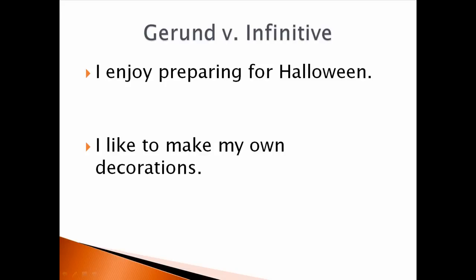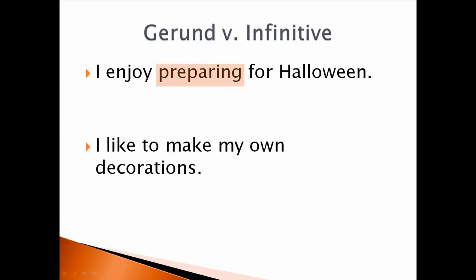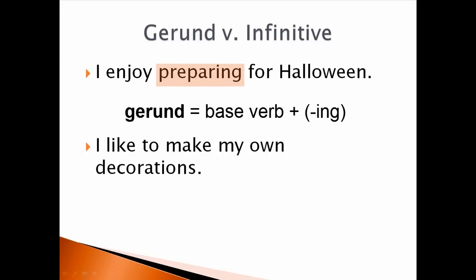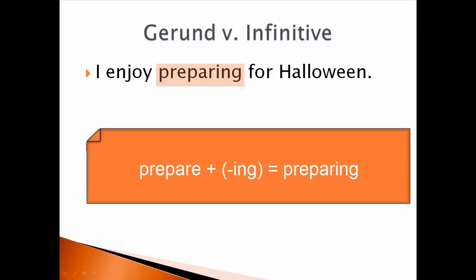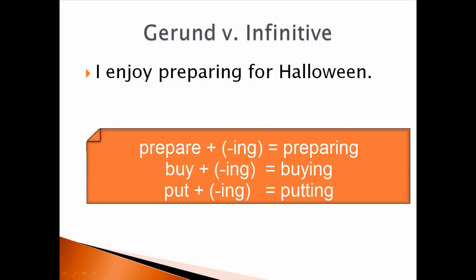Let's first talk about how we form gerunds and infinitives. Here are two sentences from my opening talk. Look at the first: 'I enjoy preparing for Halloween.' Can you identify the gerund? It's 'preparing.' We form the gerund by adding -ing to the base form of a verb: prepare → preparing. We follow common spelling rules — for example, a silent 'e' is dropped before we add -ing.